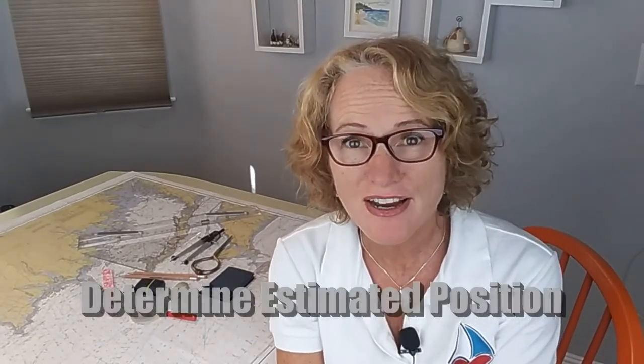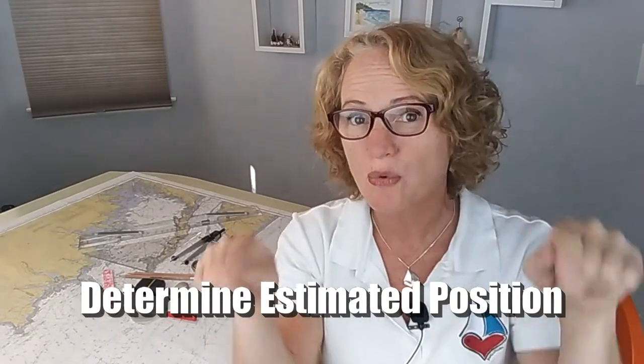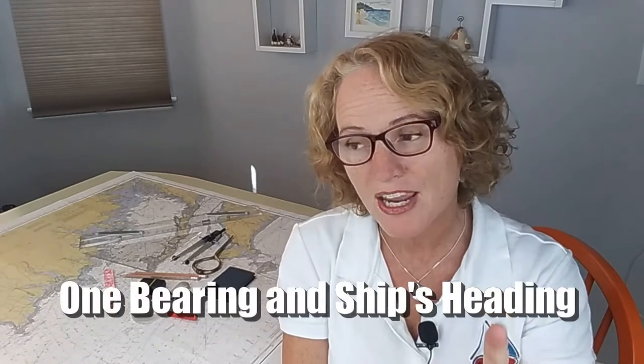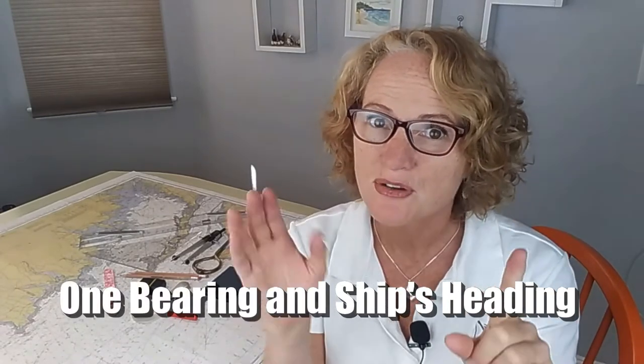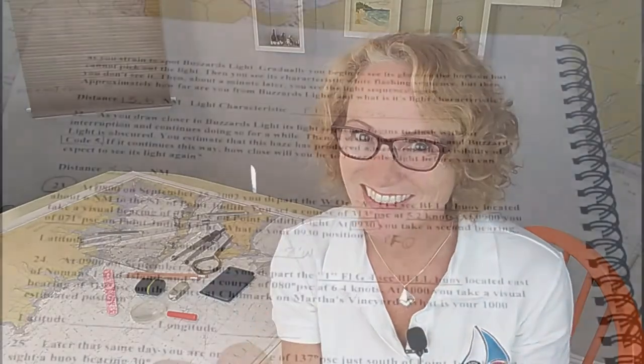Alright, so today we are going to look at how to find our estimated position. That's the square with the dot, and we're going to find it by using just one bearing and your ship's course heading. So finding our estimated position using one bearing and our ship's course heading. See you on the other side. Let's get to it.